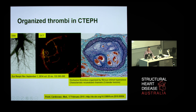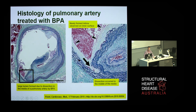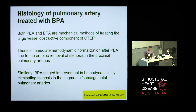These are the lesions we're actually treating — chronic organised thrombus with fibrous intimal hyperplasia and multiple small recanalised channels. This is demonstrated by optical coherence tomography, an intravascular imaging technique — like IVUS on steroids — and you can see the partially recanalised channels inside the vessel. Putting a balloon inside the artery performs a controlled dissection, just like any other balloon angioplasty in other vascular beds. Both pulmonary endarterectomy and BPA are mechanical methods of treating the large vessel obstructive component of CTEPH, achieving improvements in haemodynamics by eliminating stenoses.